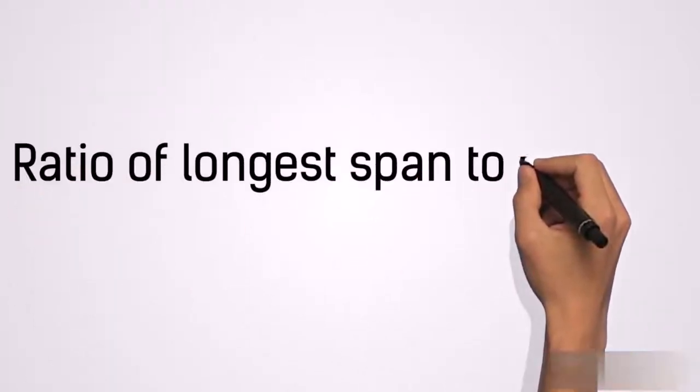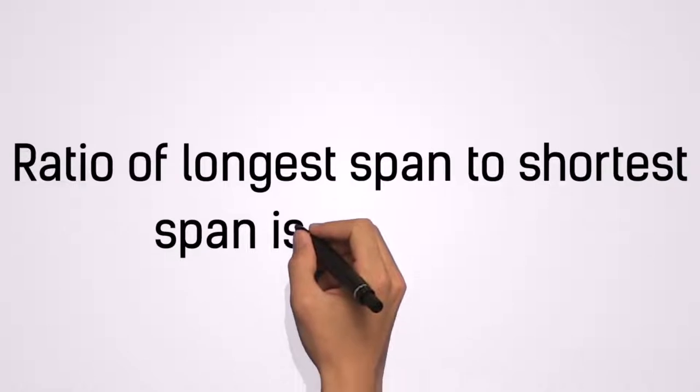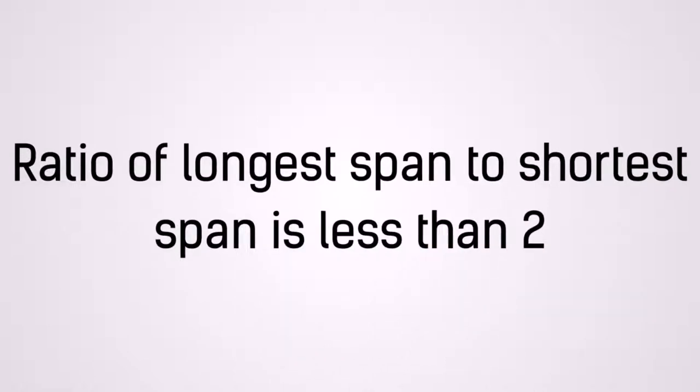In one-way slab, the ratio of the longest span to the shortest span is equal to or greater than two, while in two-way slab the ratio of the longest span to the shortest span is less than two.